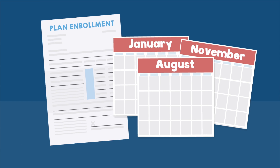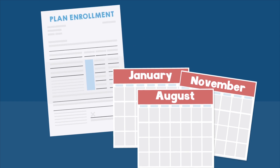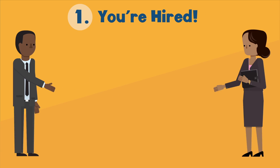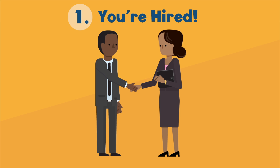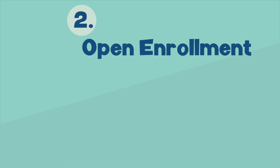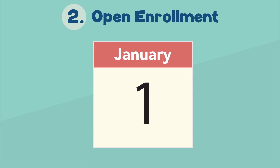There are only certain times when you can enroll in and make changes to the benefits offered by your employer. Basically, there are three times when you can enroll in benefits or make changes: when you are first hired, after a required waiting period which is set by your employer, or once a year during your company's annual enrollment — also called open enrollment. You can ask HR or your manager when this is for your company.